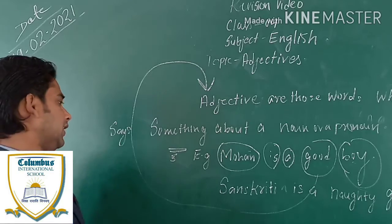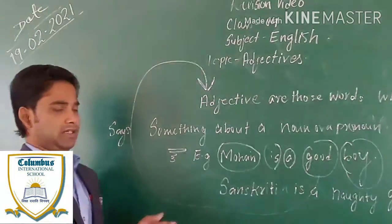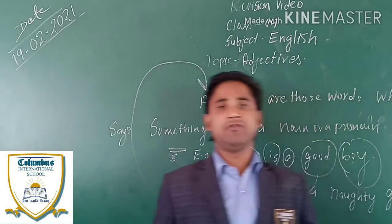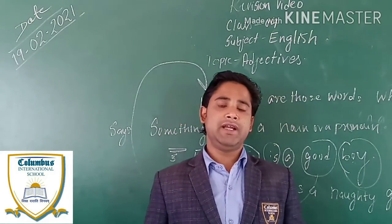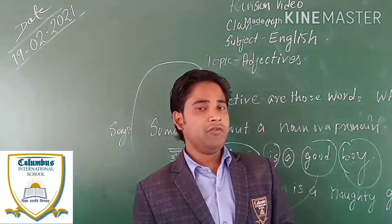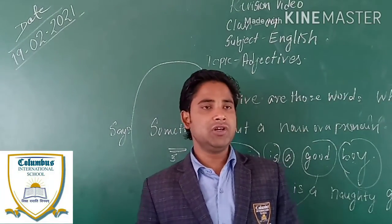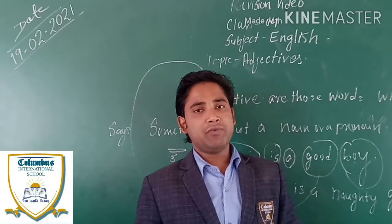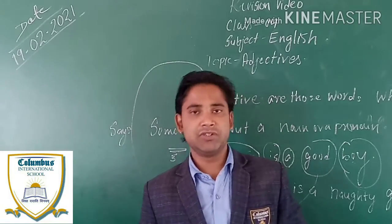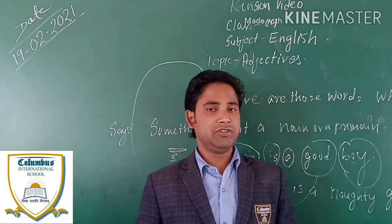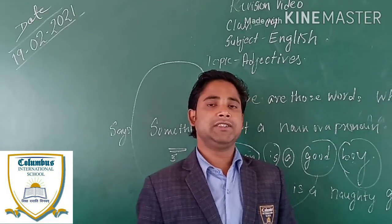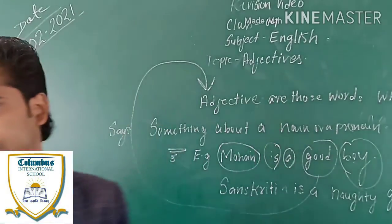Examples: 'Mohan is a good boy', 'Sanskriti is a naughty girl.' In simple words, an adjective is a word that describes a noun. Sometimes we include pronouns also, because noun and pronoun are related — a pronoun is a substitution of a noun. I hope this video is clear to you and you have got the point. Till then, have a nice day — study hard!